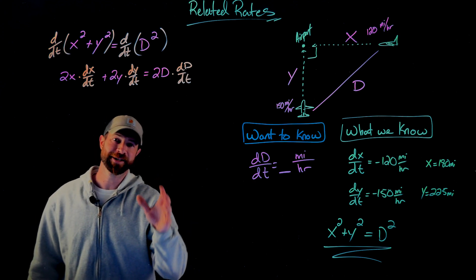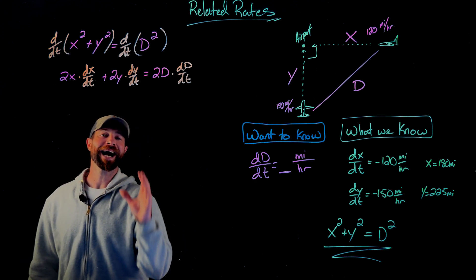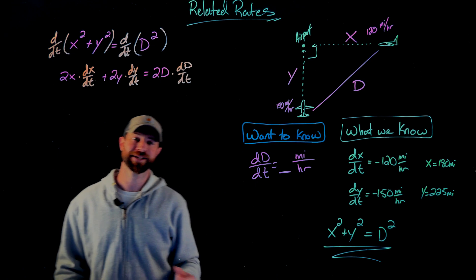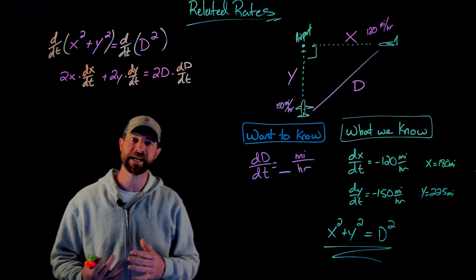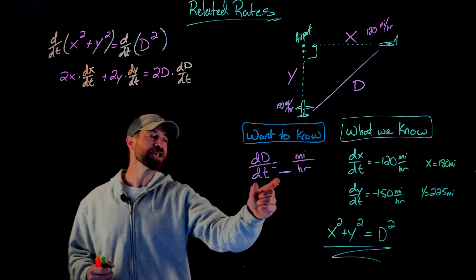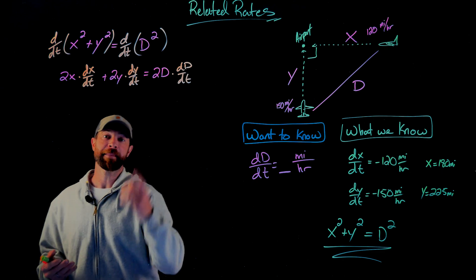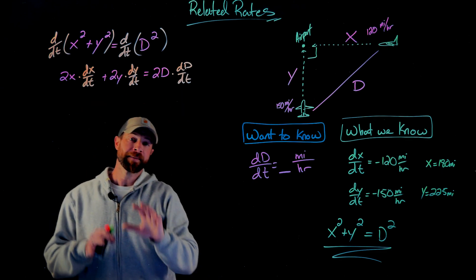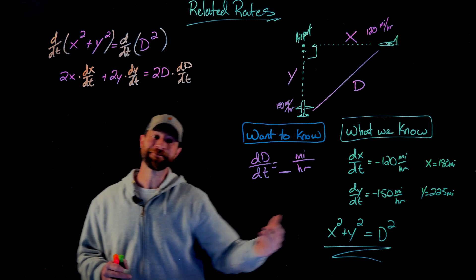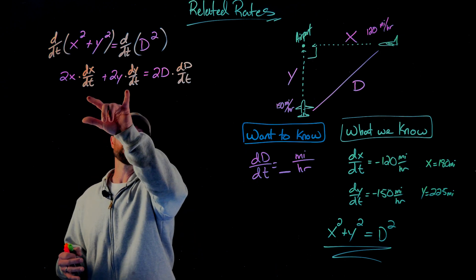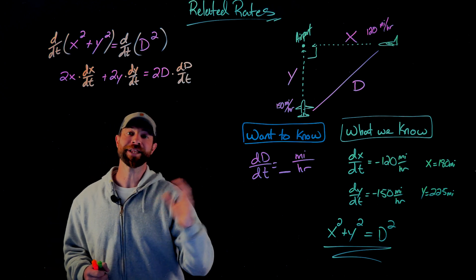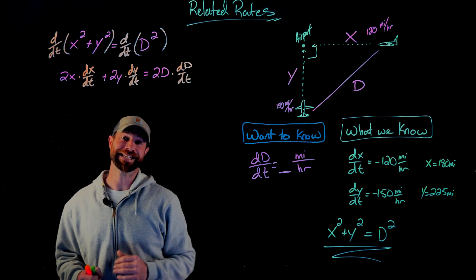Before I move forward, it's important to explain why I differentiated with respect to time. The main reason is because of the rates I was given and the rates I was asked for — they all related a distance over time. So by differentiating each of these distances over time, I knew I would get those factors out, giving me an equation where I can plug in the planes' speeds and relate them to the rate of change of the distance between the planes.